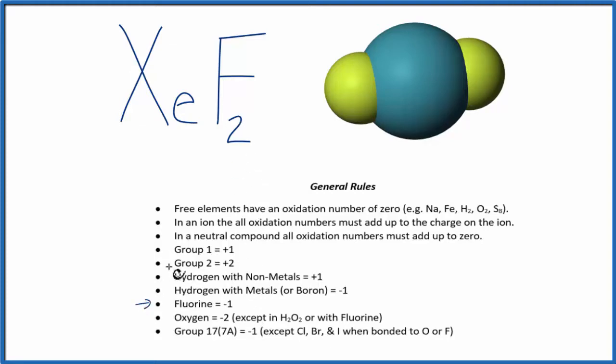We do have fluorine, however. Fluorine has an oxidation number of minus 1. And we know in a neutral compound, all the oxidation numbers add up to 0.